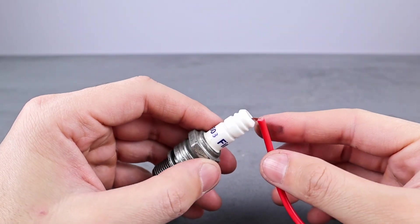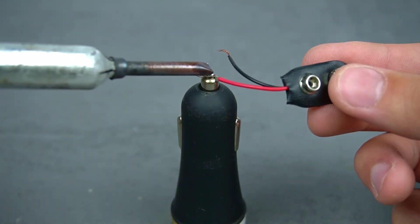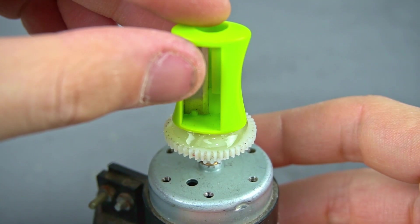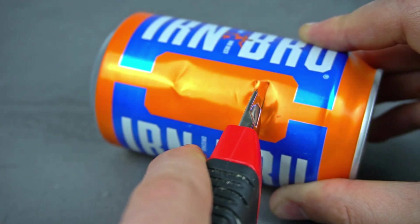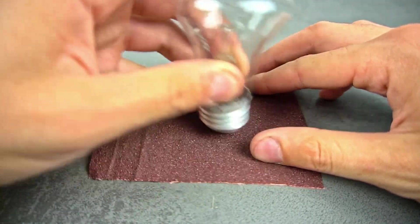Looking for some cool electronics projects? Today I'll show you how to turn everyday items into amazing gadgets. From building your own Bluetooth speaker to creating a candle powered phone charger, these projects are simple and fun. Let's dive in and start making something awesome.